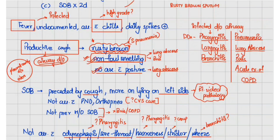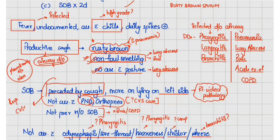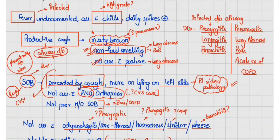Shortness of breath was preceded by cough and is more on lying on the left side. There is no PND or orthopnea, making a CVS cause less likely — this is more likely a respiratory cause. As shortness of breath is more on lying on the left side, and we suspect an airway disorder, there is probably a right-sided pathology.